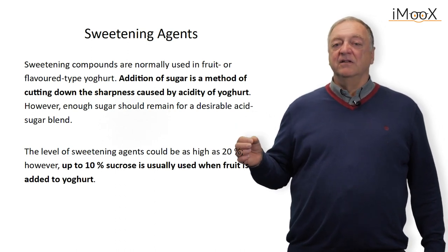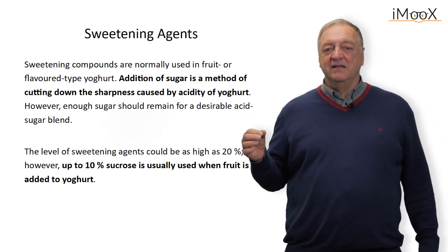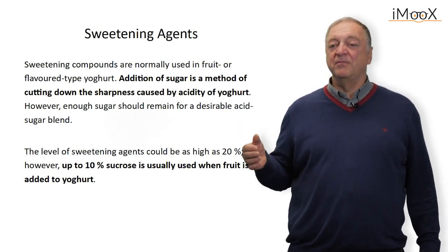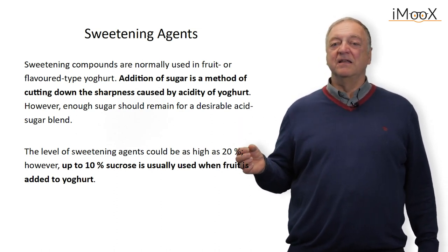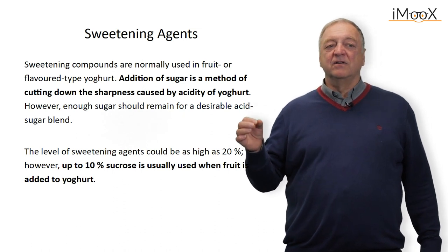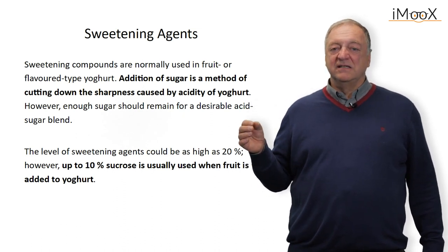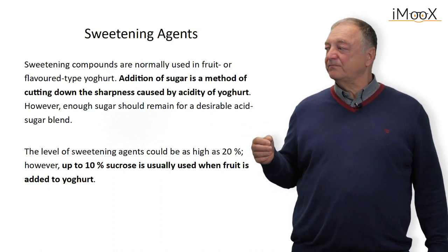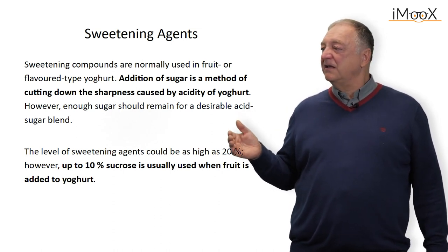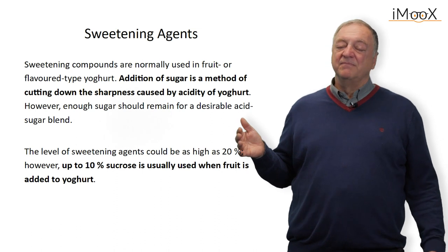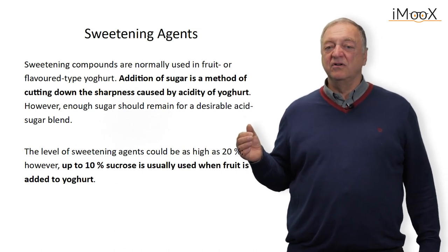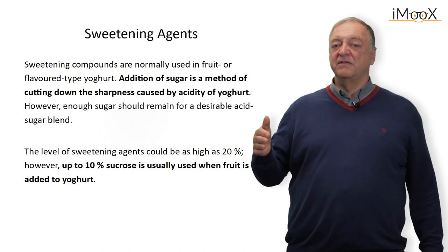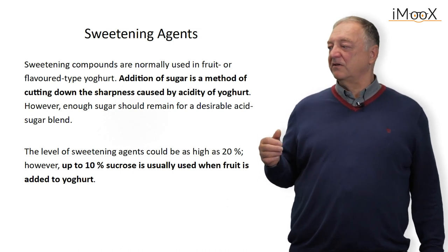After the fermentation, sugar can be added to have a sweet product, or fruits or fruit preparations can be added, because at the low storage temperature of 4 degrees centigrade there is no continuing fermentation. So we have the possibility to add around 10 percent sucrose, giving it a very nice balanced taste with sweetness and sourness.